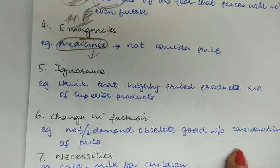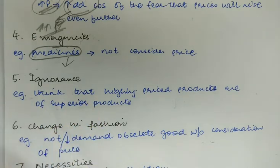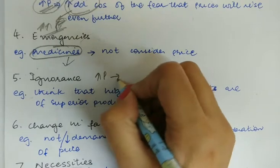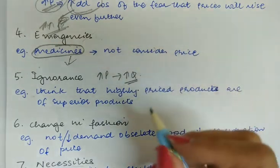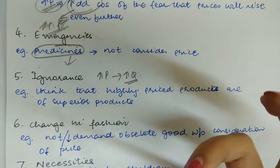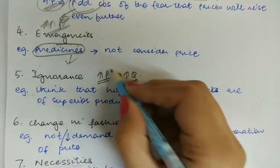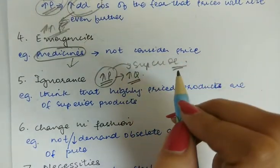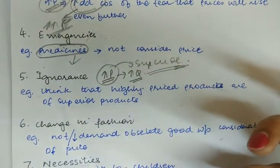The other situation where the law of demand does not hold is ignorance. Consumer's ignorance at many times induces him to purchase more of a commodity at a higher price. For example, there may be a misconception in the mind of the consumer that a higher-priced commodity is of superior quality, so they buy more of the commodity because it is superior in quality.